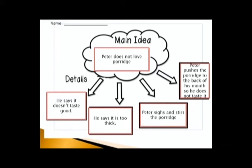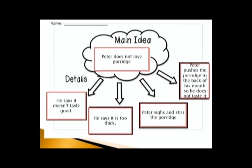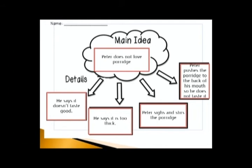Now look at my organizer. For the main idea, I have: Peter does not love porridge. The supporting details are: he says it doesn't taste good; he says it is too thick; Peter sighs and stirs the porridge; and Peter pushes the porridge to the back of his mouth so he does not taste it. I am sure you agree that that is the main idea and those are the supporting sentences. Look back at your organizer to see if you did the same thing. If you haven't, make the adjustment.